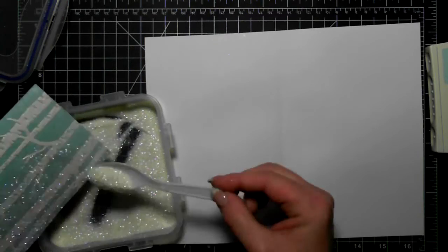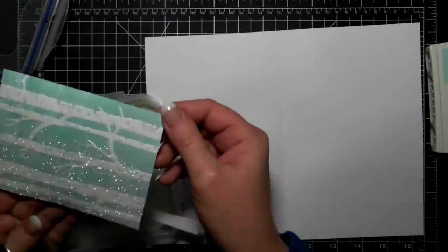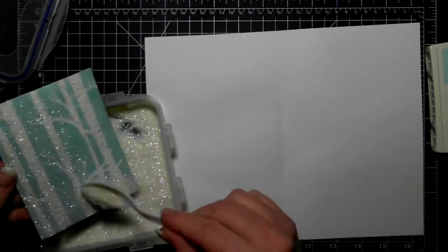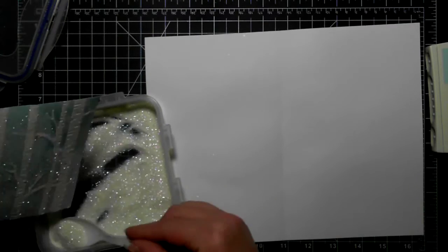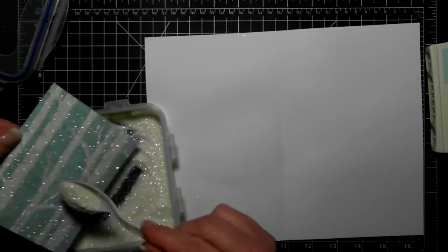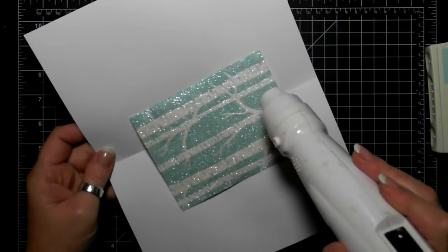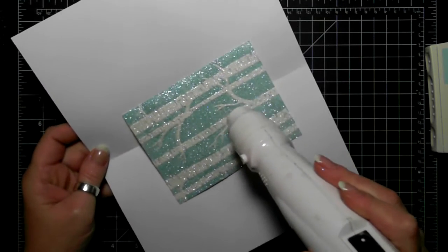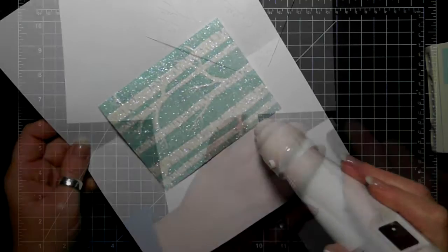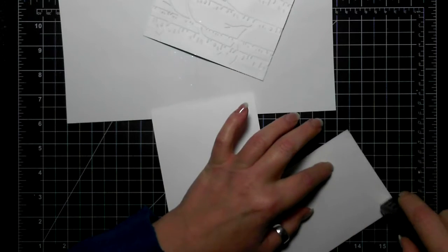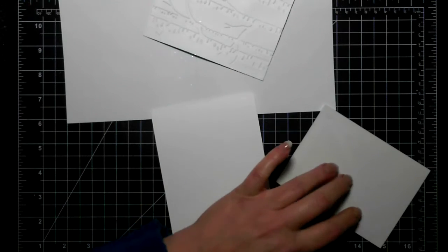So I'm using my Dazzling Diamonds and I'm just sprinkling generously all over. This is the one technique that I did not have to use the embossing buddy, so no worries about that, because you want that heat and stick powder to stick everywhere and the glitter to stick everywhere. Then just a light heating on top of the glitter just to make sure everything sticks.